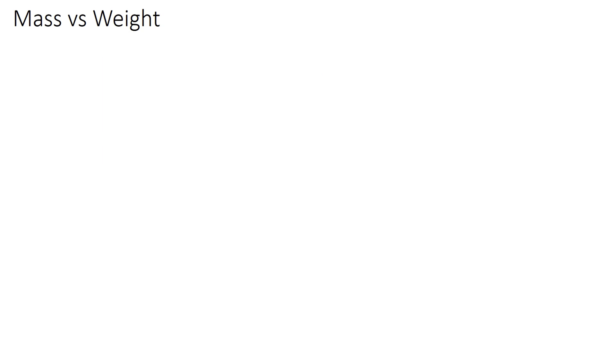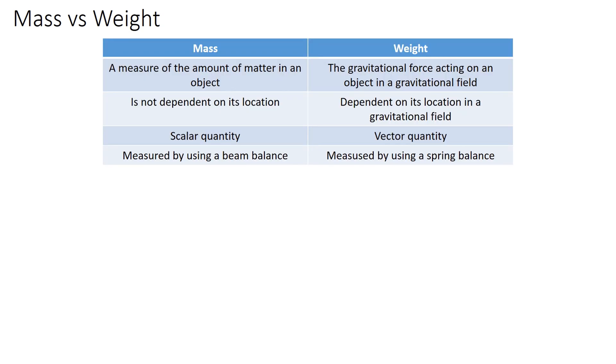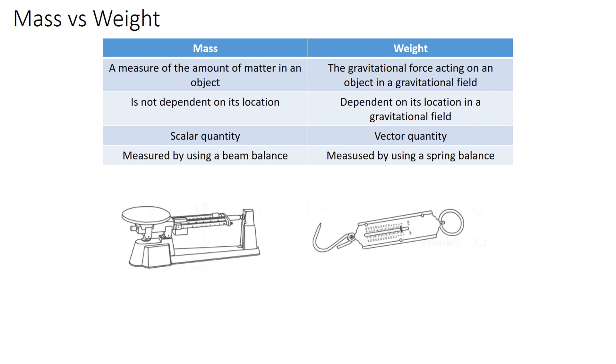Mass versus weight. Here is the comparison between mass and weight. Mass is a measure of the amount of matter in an object, while weight is the gravitational force acting on an object in a gravitational field. Mass is not dependent on its location. On the other hand, weight depends on its location in a gravitational field. Mass is a scalar quantity and weight is a vector quantity. Mass is measured by using a beam balance, while weight is measured by using a spring balance. Here is a picture of beam balance and this is a spring balance.